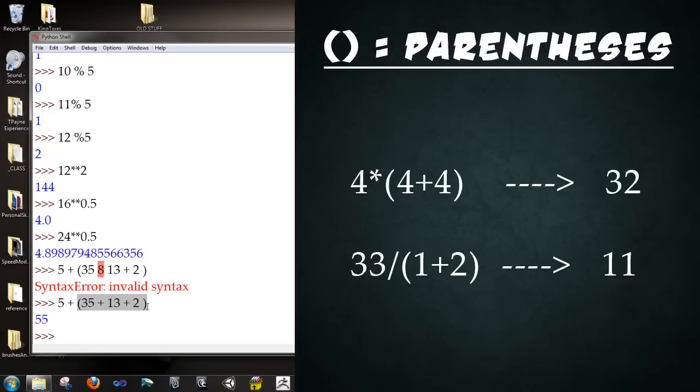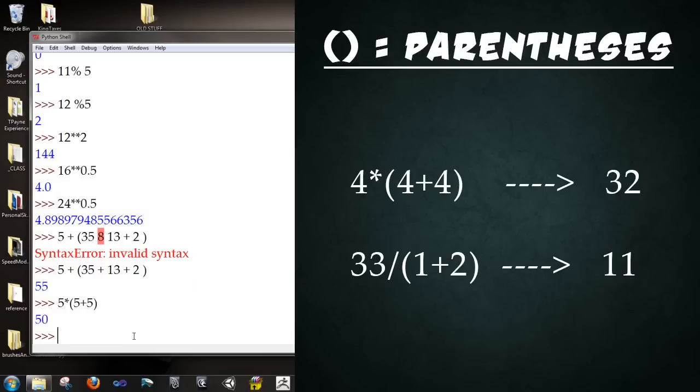So back in algebra you may have learned that you can use parentheses to close off specific parts of the algebra. The same works in programming. So if I type 5 times parentheses 5 plus 5. Close parentheses. Enter. It works the exact same. It adds the two 5s first that are closed within the parentheses and then multiplies them by the other 5. And so we end up with 50. So it's 10 times 5 is 50. So parentheses work the exact same.